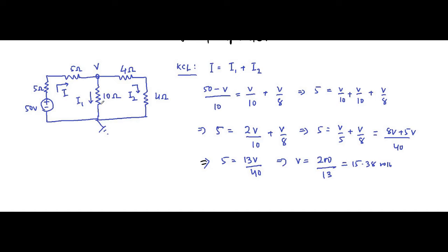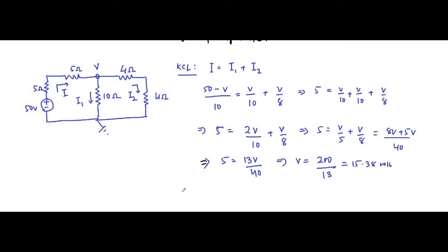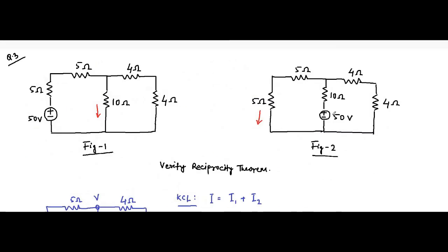Now we have to determine I1, because the source shifting happens here. I1 is the current through the 10 ohm branch, so I1 equals V by 10 ohm, which is 15.38 divided by 10, equal to 1.538 amperes. This is very important because in the next part the 50 volt source will be shifted to the second branch.